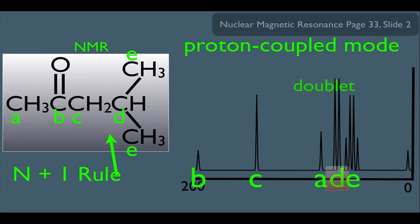Now, let's analyze the C carbon here. Notice, he has two hydrogens directly connected to him. His N value, therefore, is 2. 2 plus 1 is 3, so the C hydrogen should appear as a triplet.